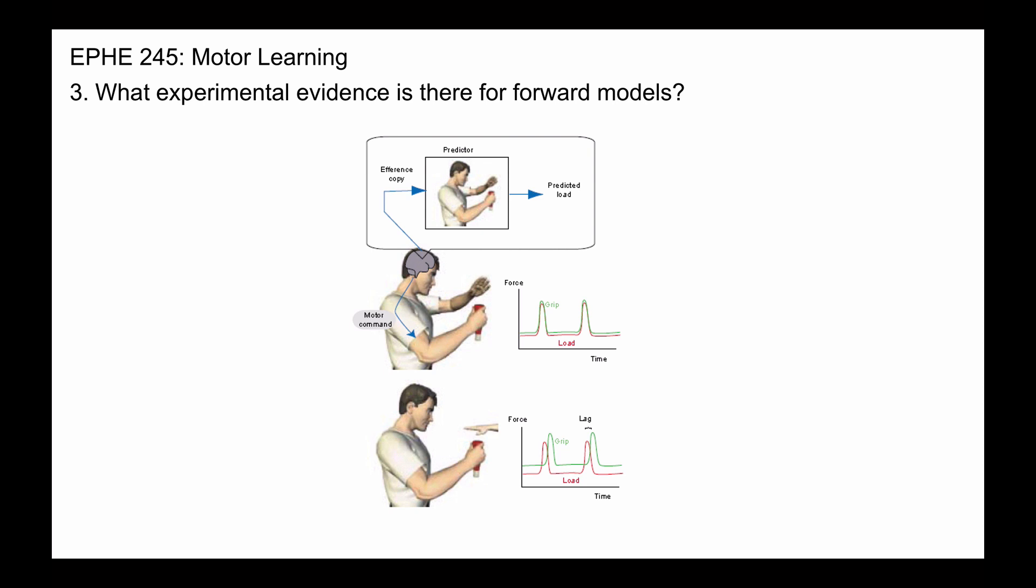Essentially what happens here is in this middle figure you see someone holding their hand and their job is to resist a downward force that they themselves are applying. When they apply the force, that's the load, you'll notice that the grip force is equivalent and perfectly timed to align with the load force. This is because the forward model is predicting what's going to happen and can compensate for the load force instantaneously.